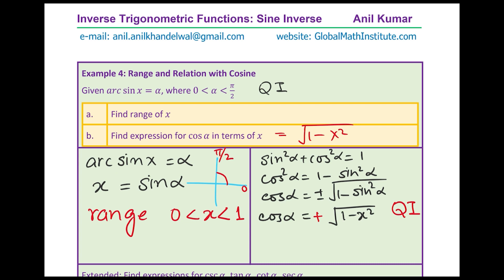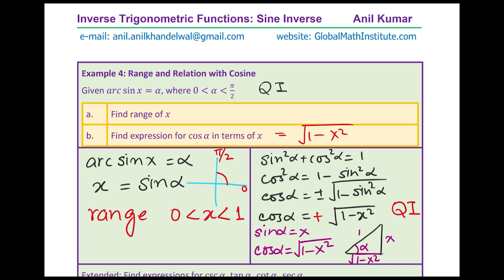However, a preferred approach is the triangle method. Since sine alpha equals x, sketch a right-angled triangle where this angle is alpha, the opposite side is x and the hypotenuse is 1. The base is therefore the square root of 1 squared minus x squared. From the triangle, cosine alpha equals the adjacent side over hypotenuse, which is root of 1 minus x squared. This triangle approach is an excellent strategy — let's call it Strategy 1.